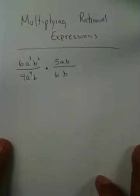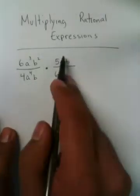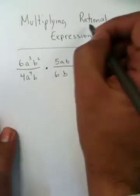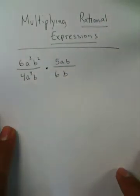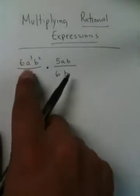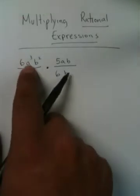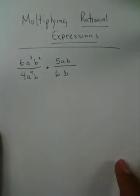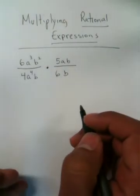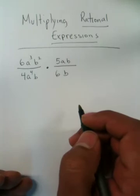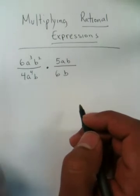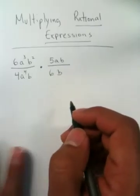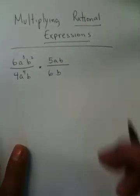Multiplying Rational Expressions. What I have is two fractions — that's what a rational expression means, first of all: it means a fraction. I'm going to multiply these two fractions together. The way I teach people to do this is in a very simplistic manner. This is not the fastest way to do it, but it will make the most sense.